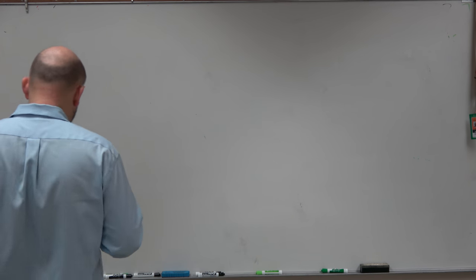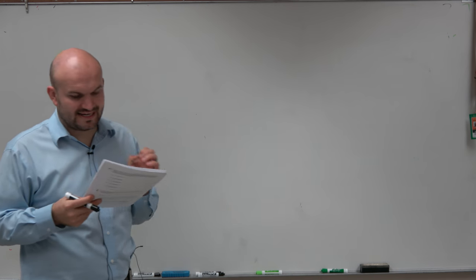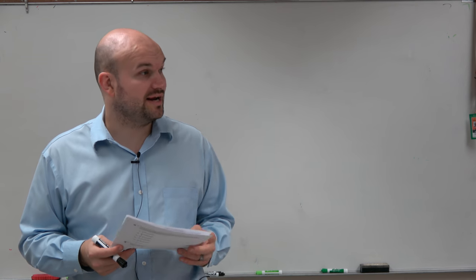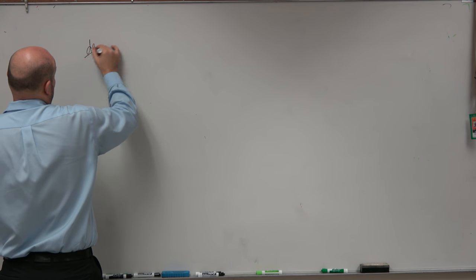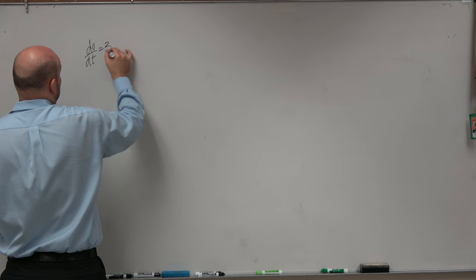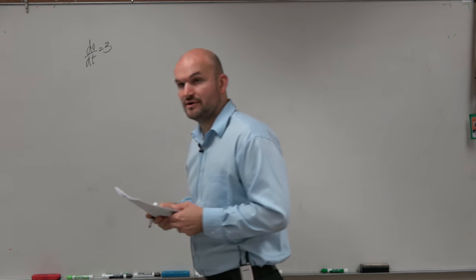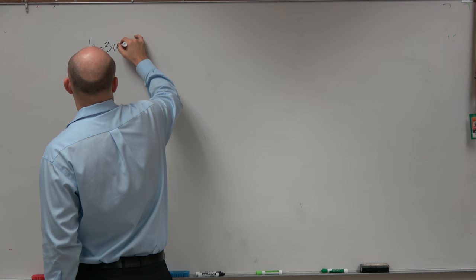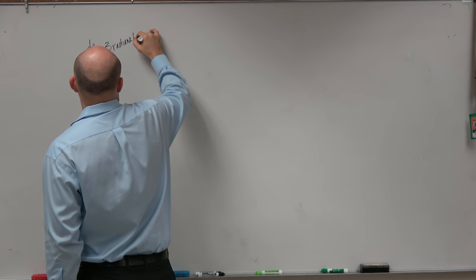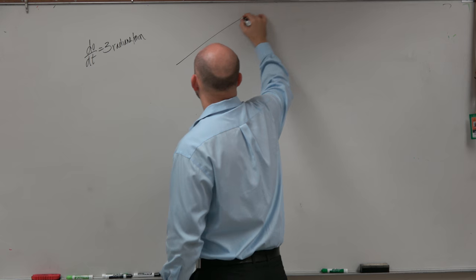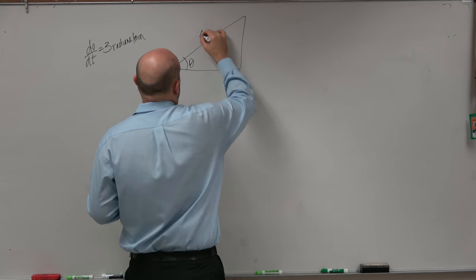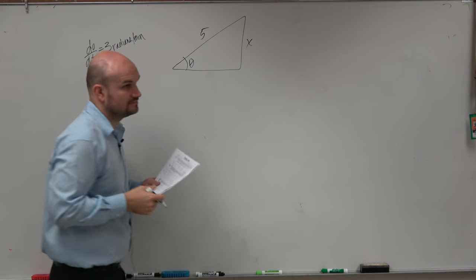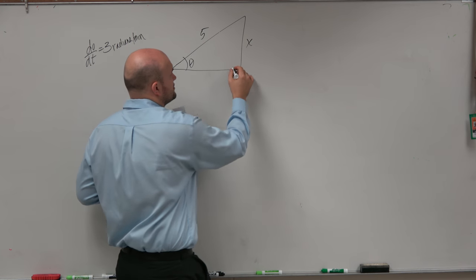The next one says, in a triangle above, if theta increases at a constant rate of 3 radians per minute. OK, so d theta dt is equal to 3 radians per minute, right? And then they gave us a triangle, theta 5 and x. And they said that's a right triangle as well.